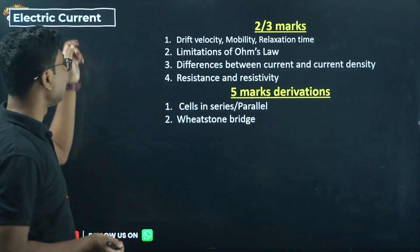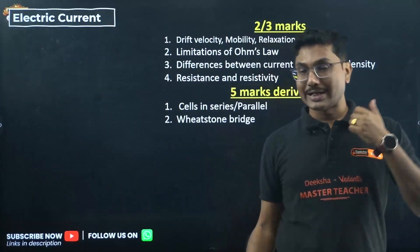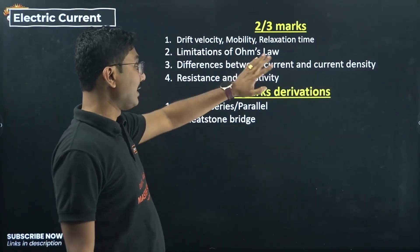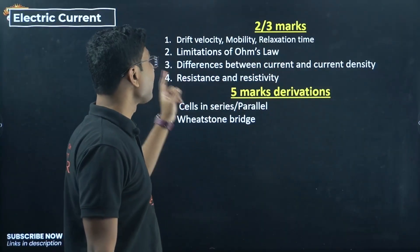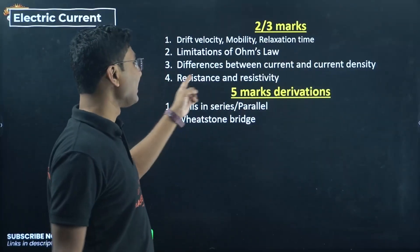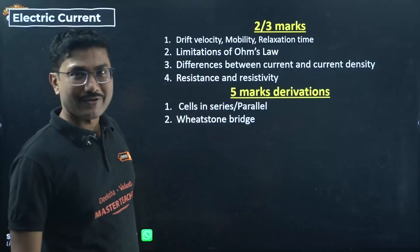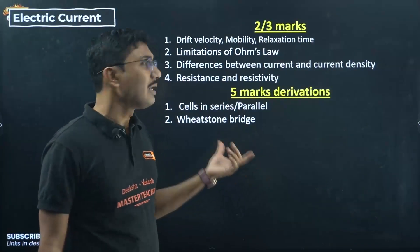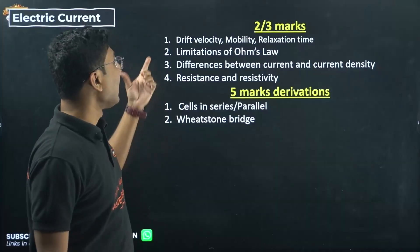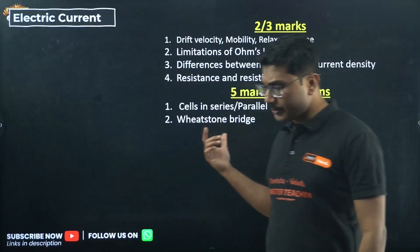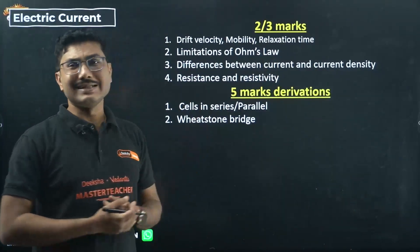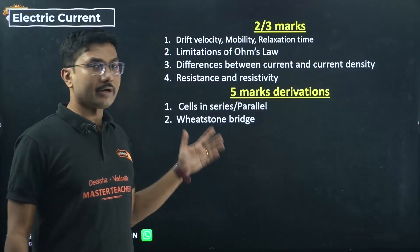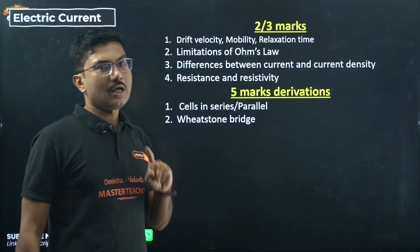Next chapter: Electric Current — a very important chapter from which you can expect one numerical and one derivation. Important 2-3 marker topics: drift velocity, mobility, relaxation time, limitations of Ohm's law, difference between current and current density, resistance and resistivity. For 5-mark derivations, cells in series and parallel, and Wheatstone bridge are the most important. Wheatstone bridge came last year, so cells in series or parallel might be slightly more important, but for pre-board do not skip Wheatstone bridge. Kirchhoff's laws will also yield one numerical question.